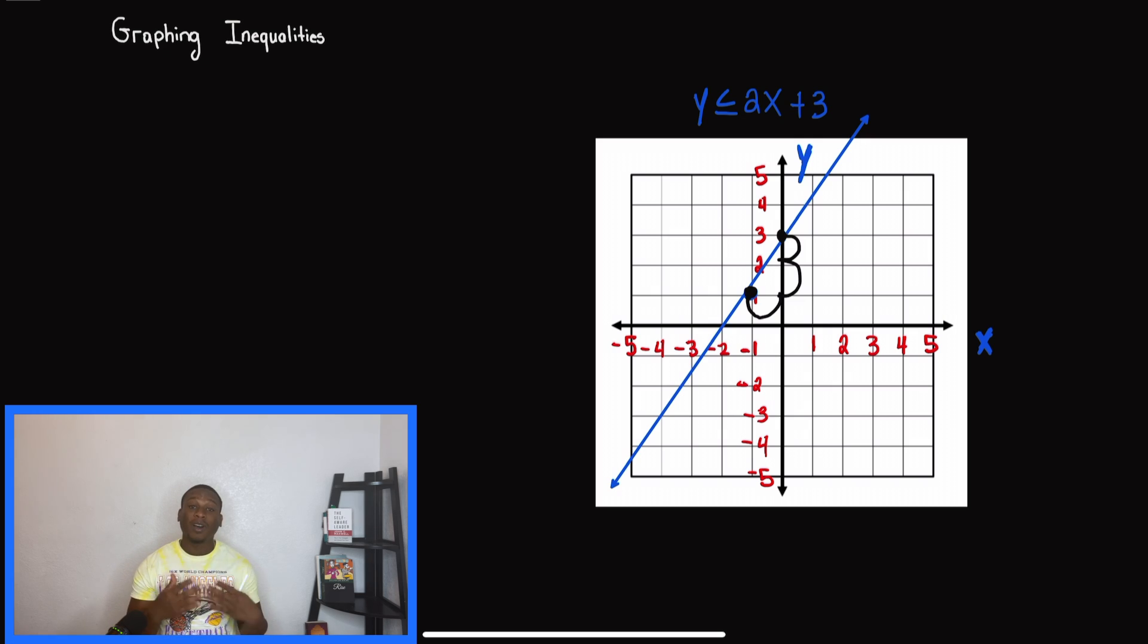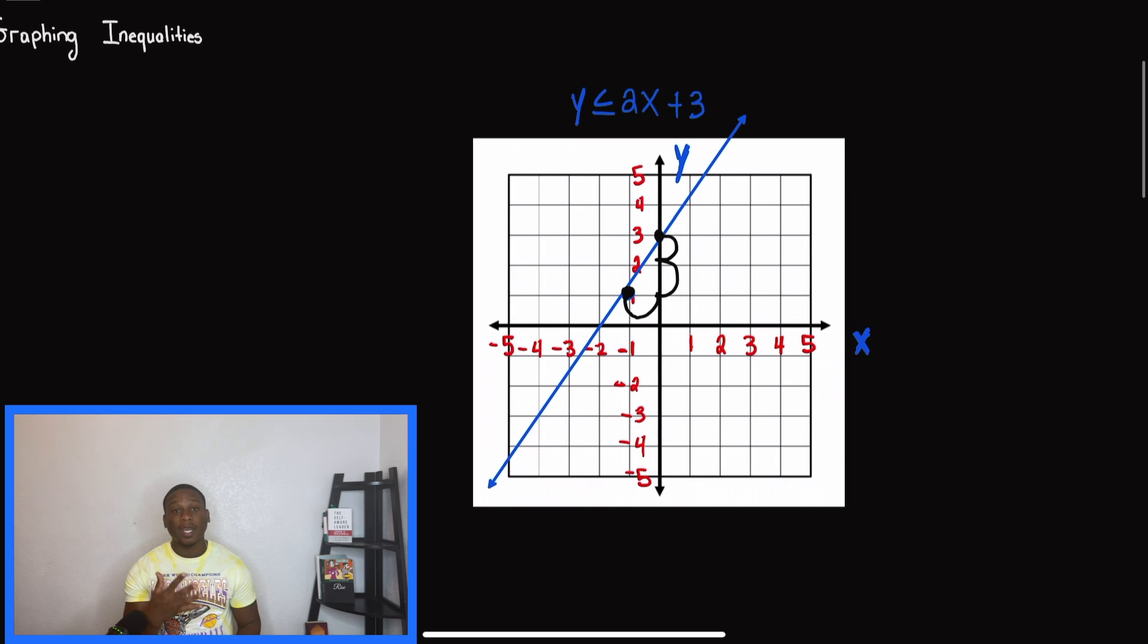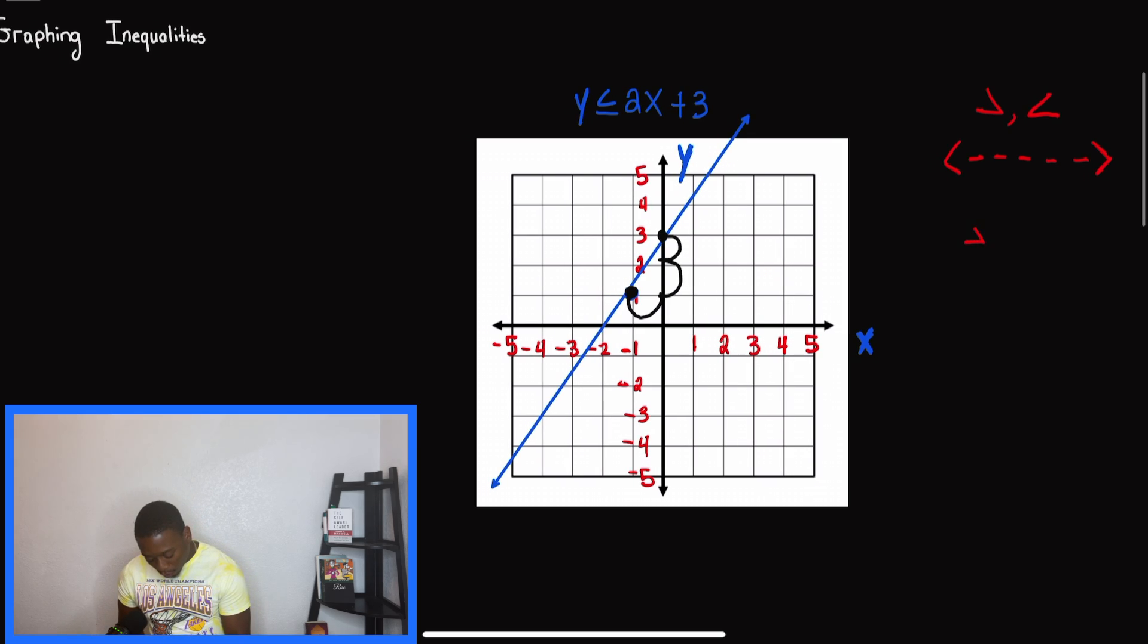When we're talking about graphing inequalities on a coordinate plane, there are two things we need to know. When we have the greater than or less than sign, that line on the graph is going to be dotted. When we have greater than or equal to, or less than or equal to, we're going to have a solid line.